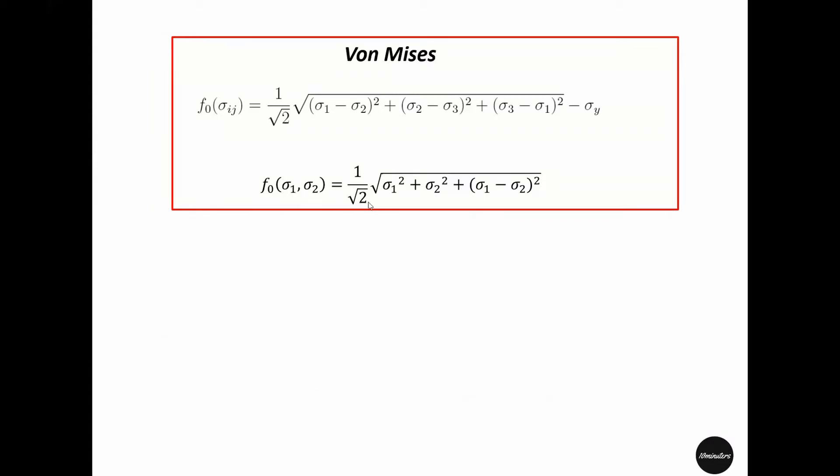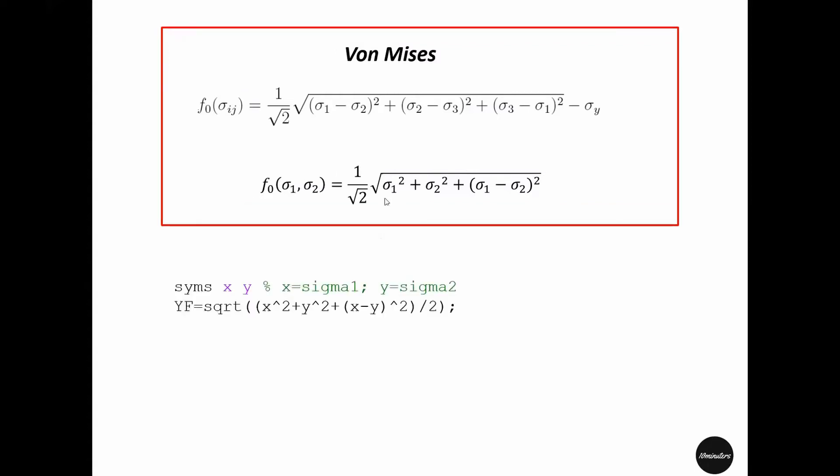We will start with two-dimensional von Mises yield surface plot. Defining sigma 1 and sigma 2 as x and y, we will write the yield function yf. So basically this part of the equation is written here. Plotting of this yield function will be done using this fcontour function. We named this contour Mises.